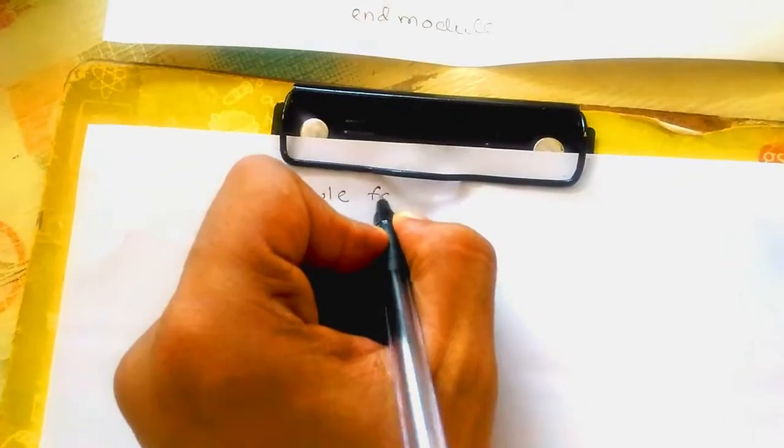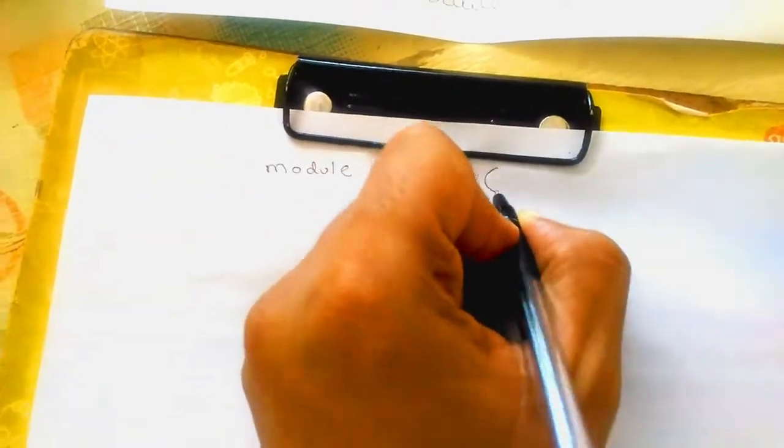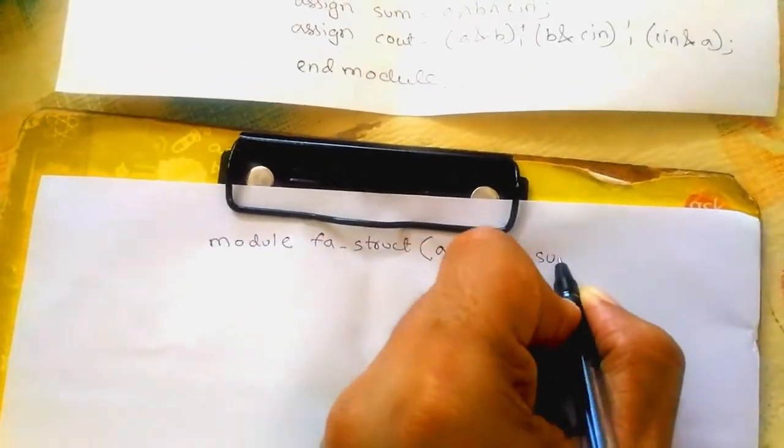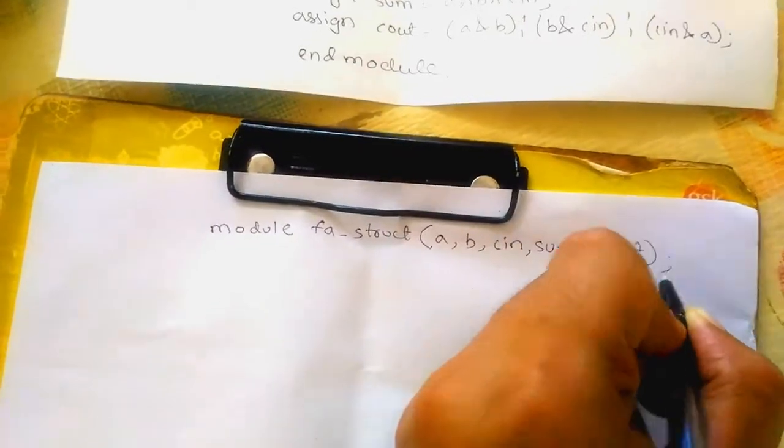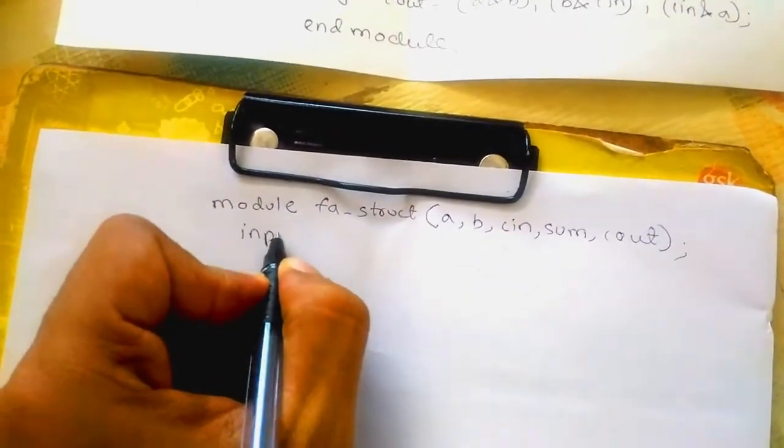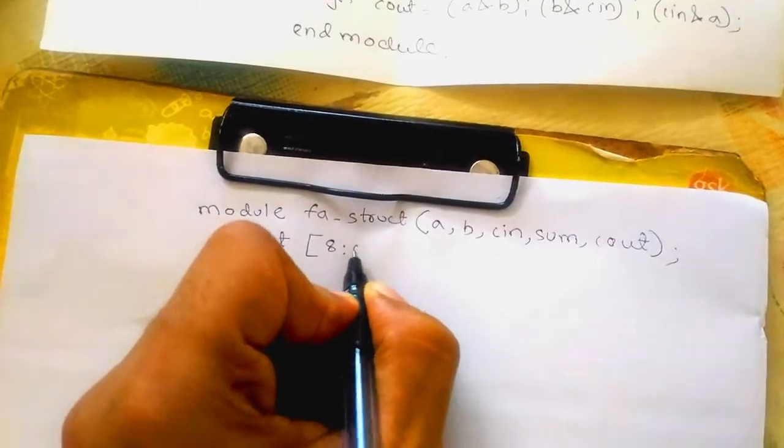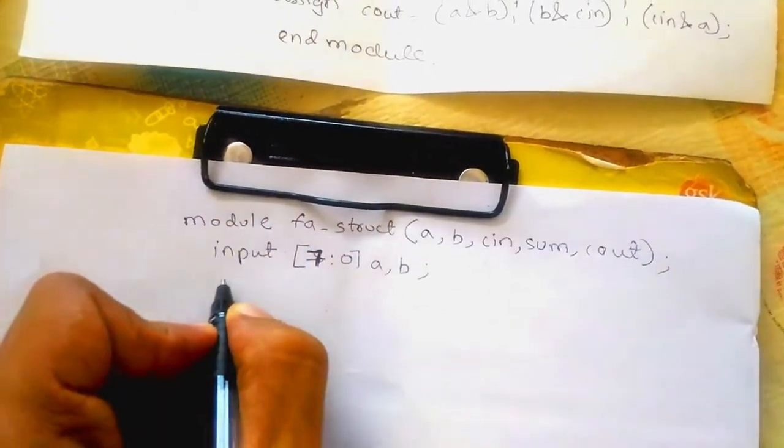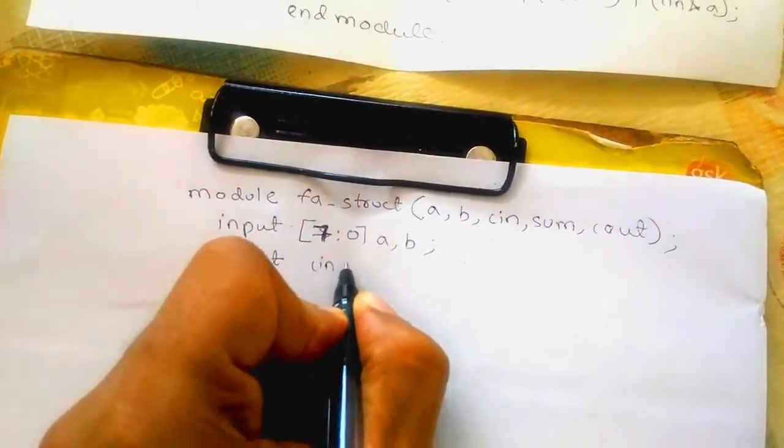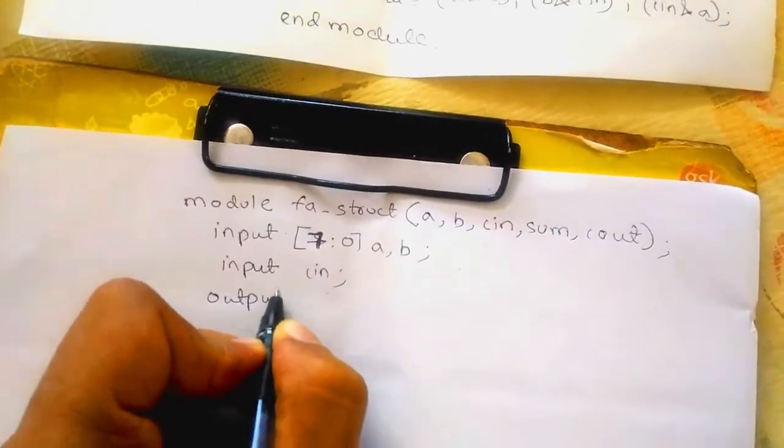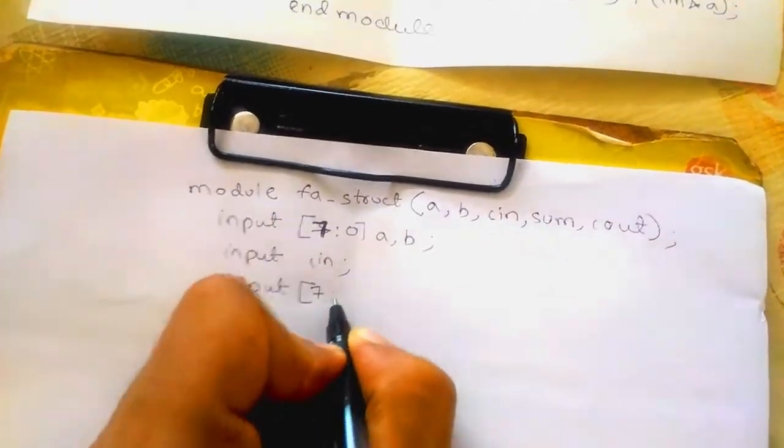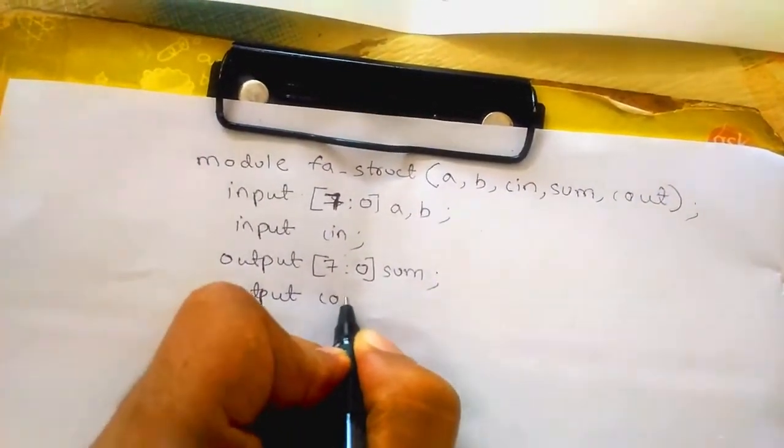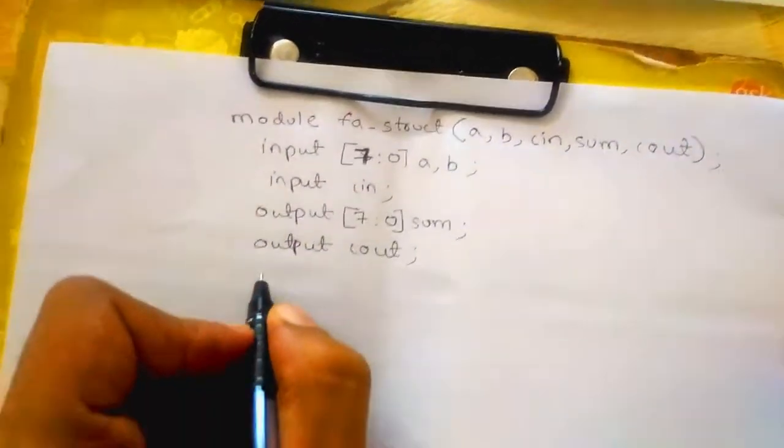Next we are going to write the structural code. Module full_adder_sum_structural. Again we have a, b, cin, sum and cout. Now here the input is 8 bits, so I will be writing a 7 down to 0, b input, cin.